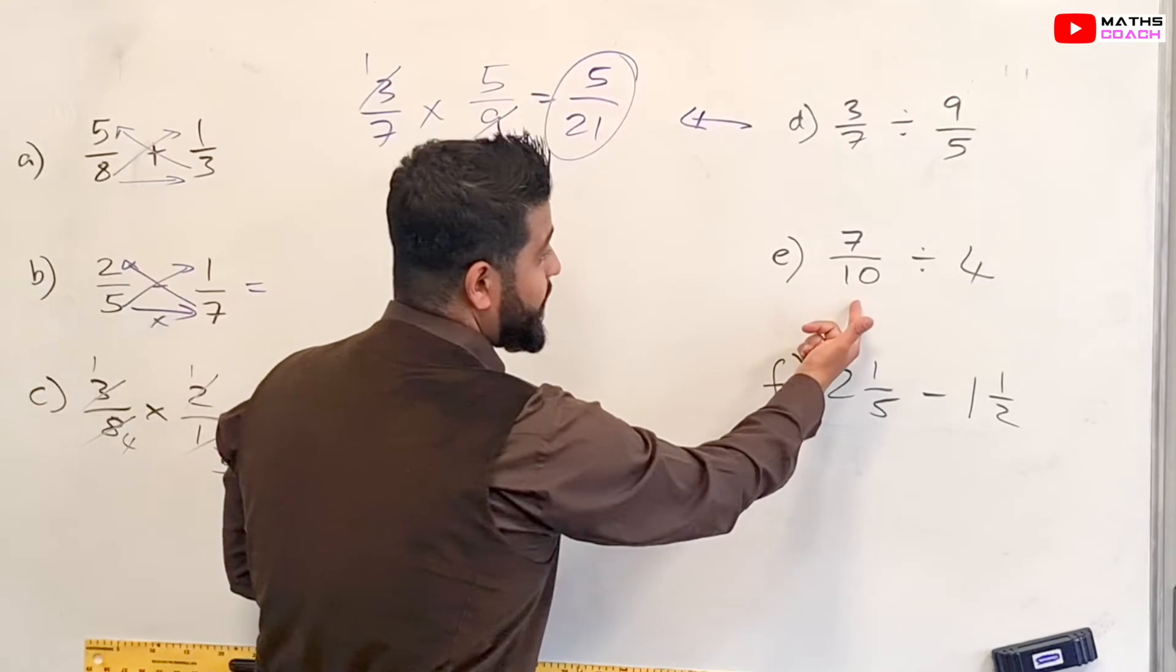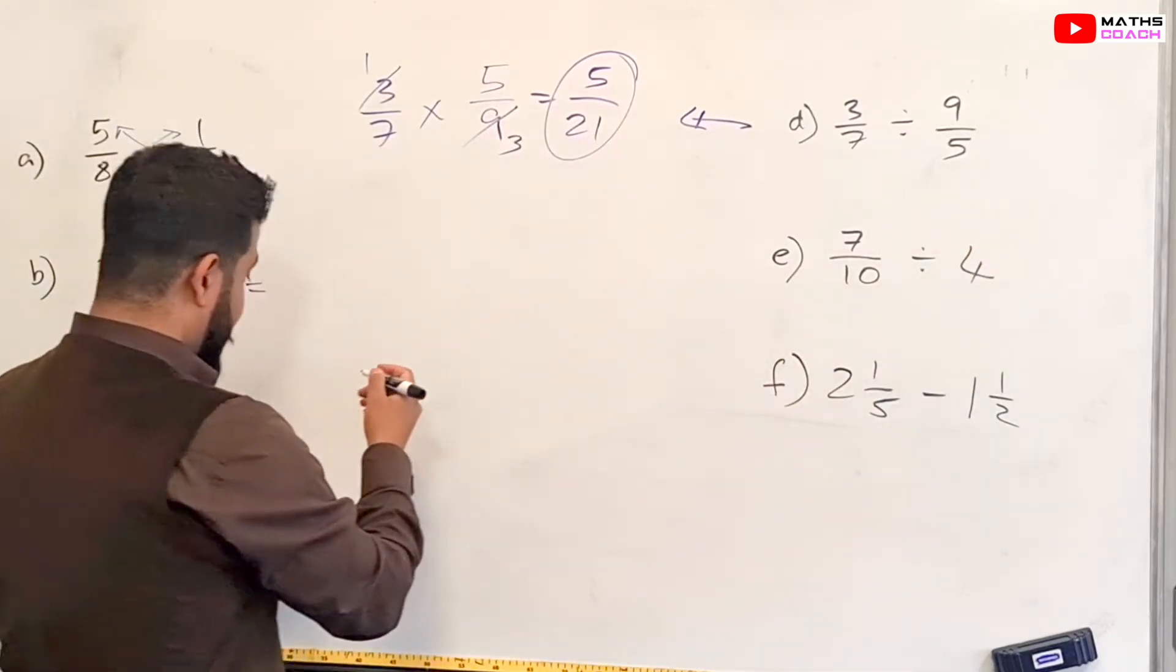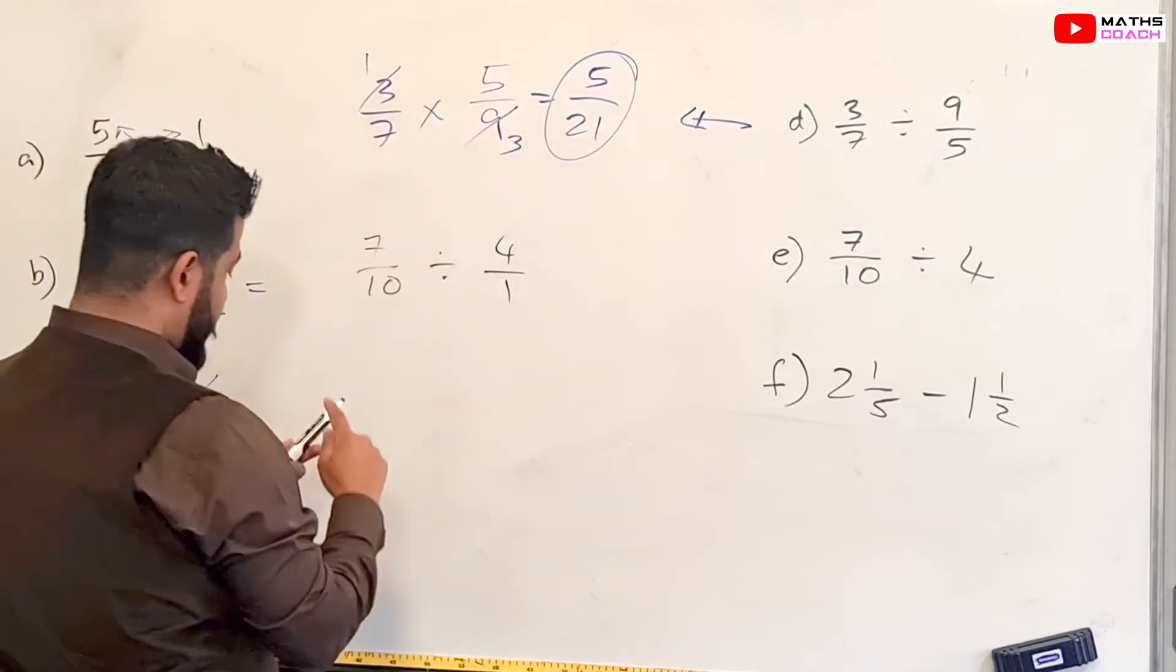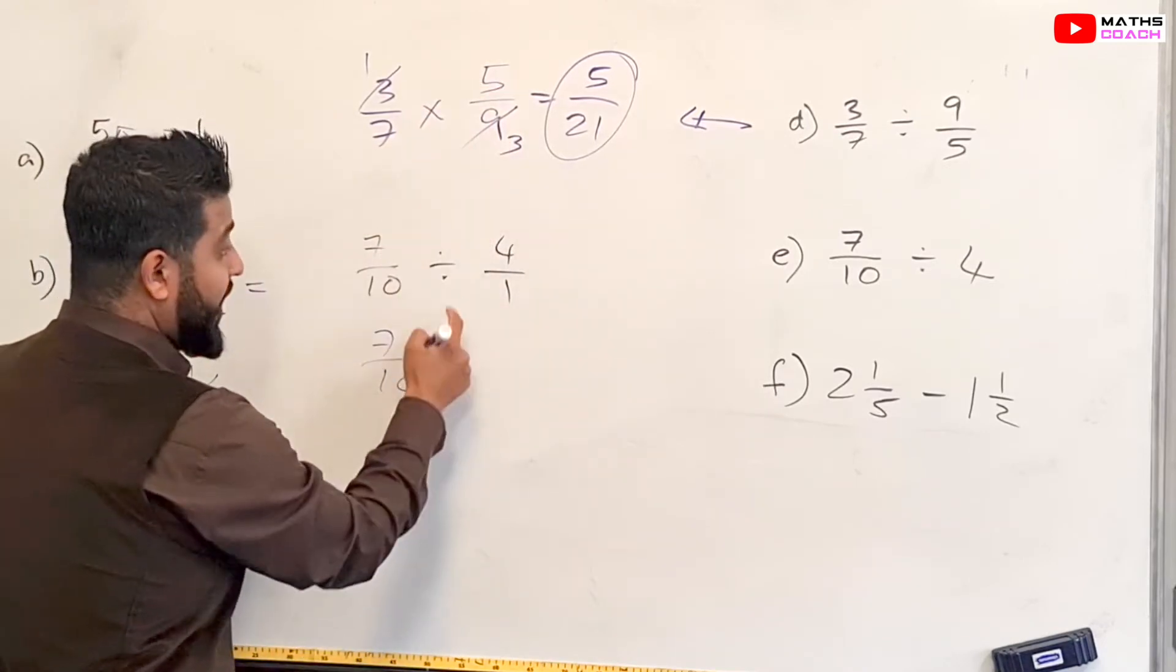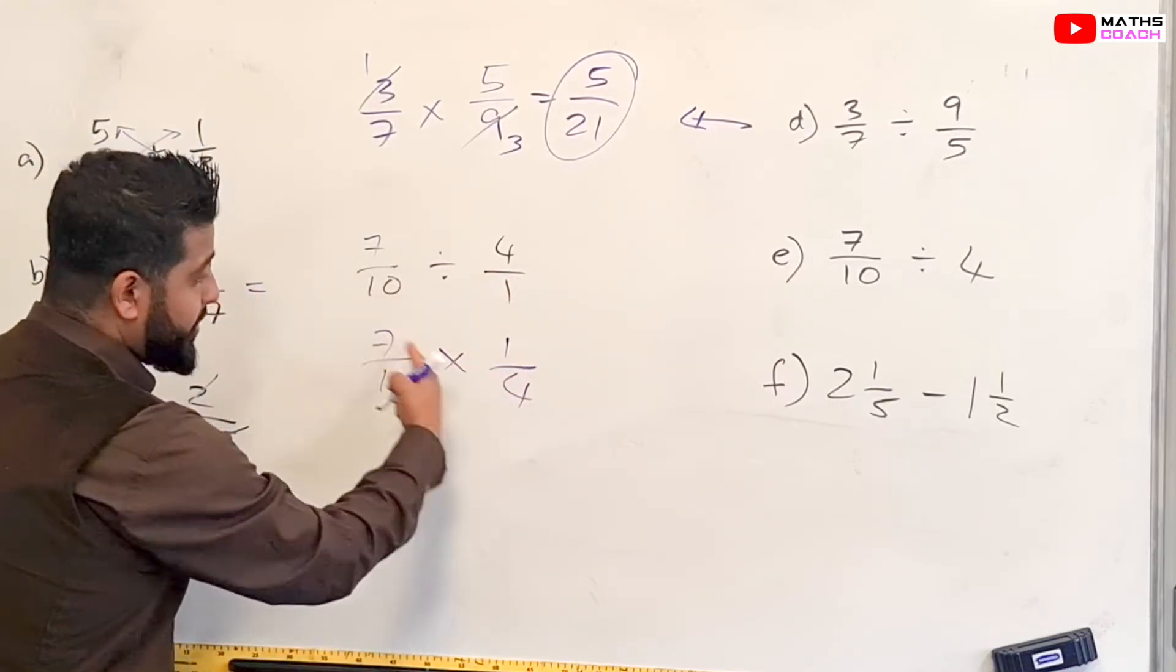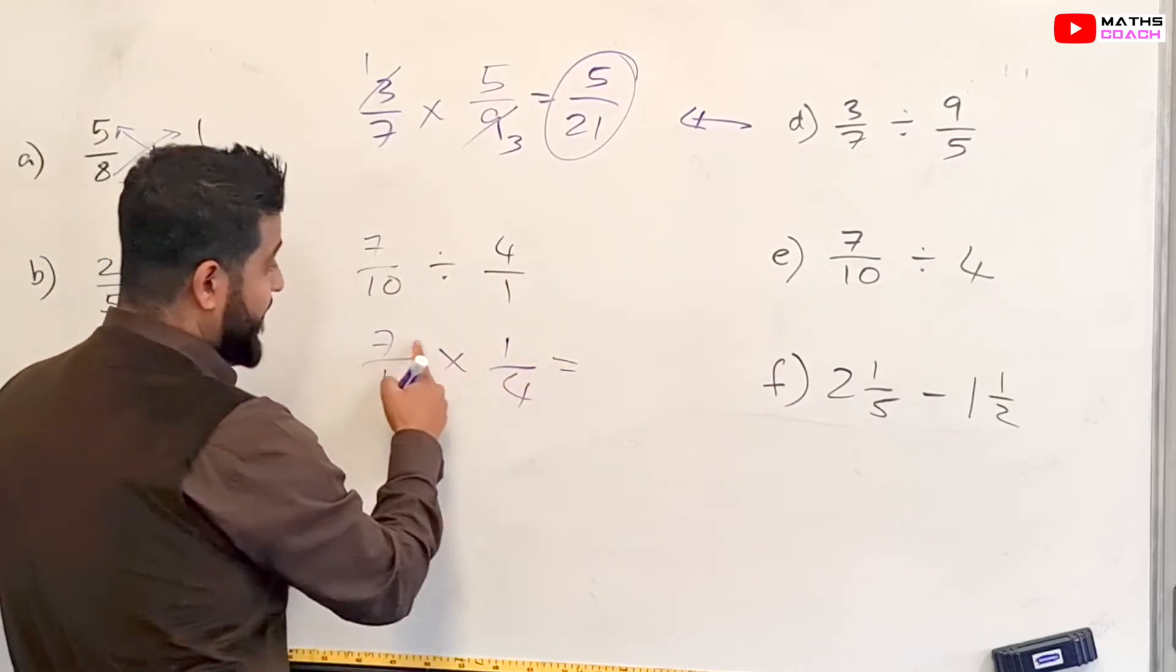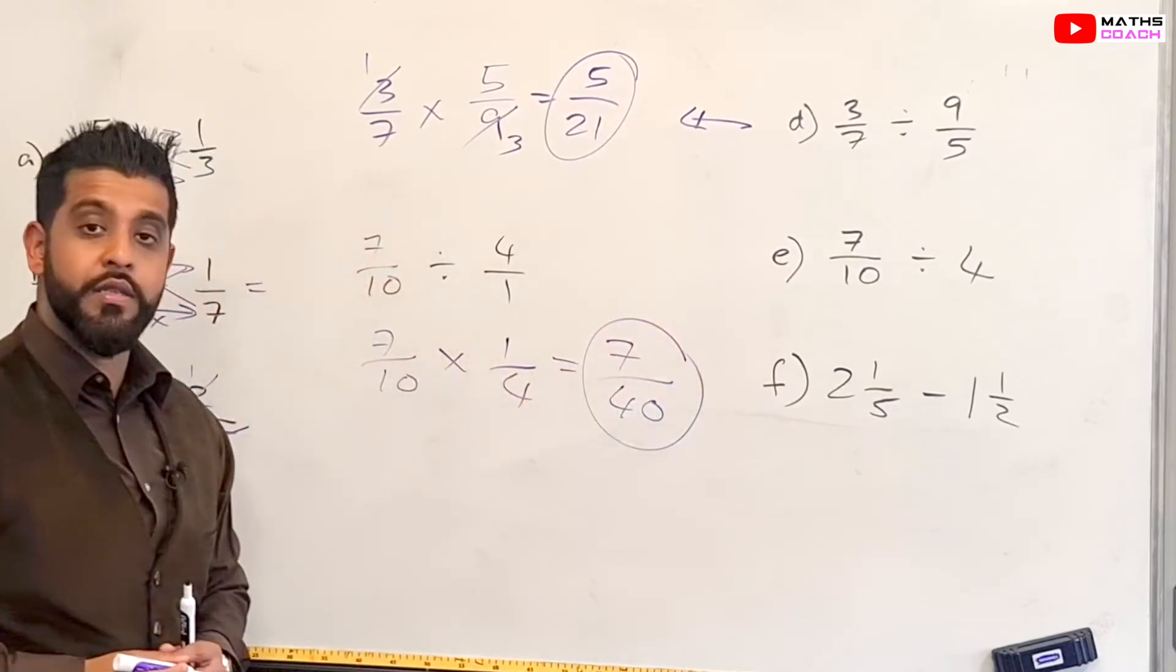Now with this one you've got 7 over 10 divided by a whole number which is 4. What you can do is just make the whole number into a fraction by putting 1 over 1. And you just follow the process as you did up there. So you have 7 over 10 times by 1 over 4. You try to divide diagonally but here you can see that there's nothing in common. So you're just going to have to multiply across. 7 times 1 is 7 and 10 times 4 is 40. And that's our final answer.